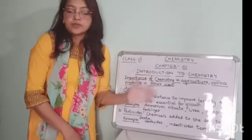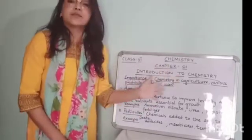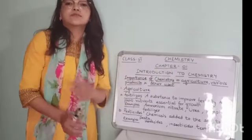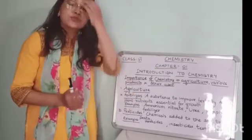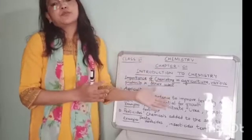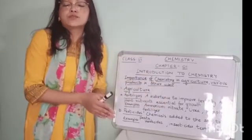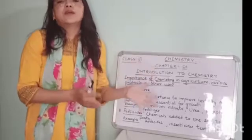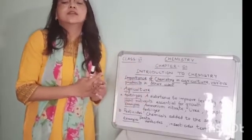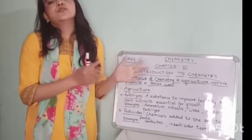Let's continue our chapter — Chapter Number One, which is Introduction to Chemistry. Earlier I told you about the apparatus that are used in the chemistry laboratory. Today we'll be doing the importance of chemistry in agriculture and its products and other uses of chemistry.